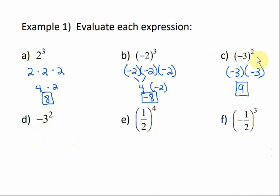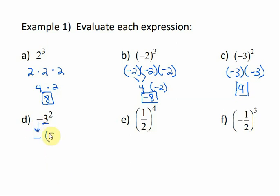Now D looks very similar to C, but what is the difference between D and C? If you notice, there's not a parentheses around the negative 3. That makes a big difference — the base is 3, not negative 3. So 3 is the only thing that gets multiplied times itself, and this negative is just brought down. So we bring down the negative sign and multiply 3 times 3, which gives me negative 9. That's different than multiplying negative 3 times negative 3. We have to pay attention to parentheses — we only multiply the negative if it's in parentheses being raised to the power.